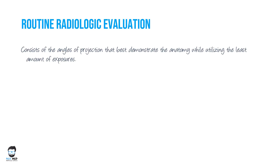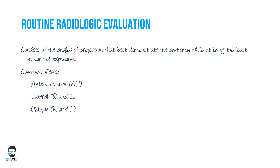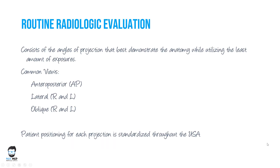Routine radiological evaluation consists of angles of projection that best demonstrate anatomy while utilizing the least amount of exposures. The common views we use are AP (anterior-posterior) and lateral view. We get one for each side — right and left — and this is primarily how routine radiographs are labeled. You can also have extra views like oblique views, and patient projection for each view is standardized throughout the world.